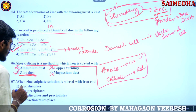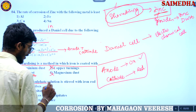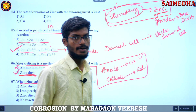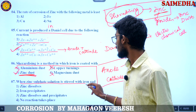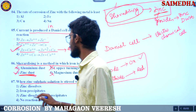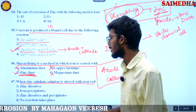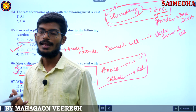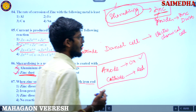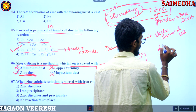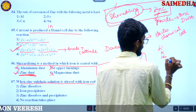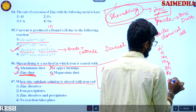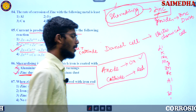Next question: when zinc sulfate solution is stirred with an iron rod, what happens — zinc dissolves, iron precipitates, zinc dissolves and precipitates, or no reaction? To identify this, we use the electrochemical series: lithium, potassium, sodium, magnesium, zinc, iron, aluminum, hydrogen, and so on. This is the electrochemical series.